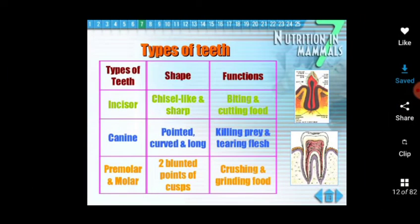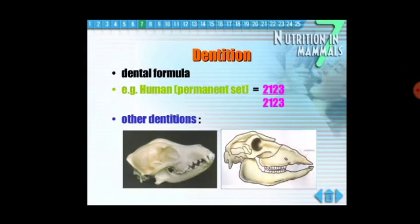Then we discussed about the types of teeth. We are having 4 types of teeth: the incisors, the canines, premolars, and the molars. We will study these 4 types of teeth in detail with their functions. Then we discussed about the dentition, which is the arrangement of the teeth in any organism.